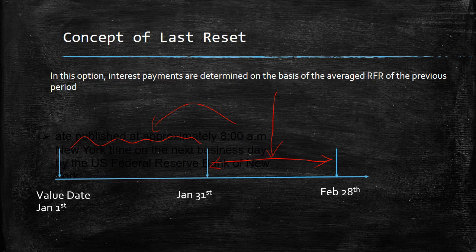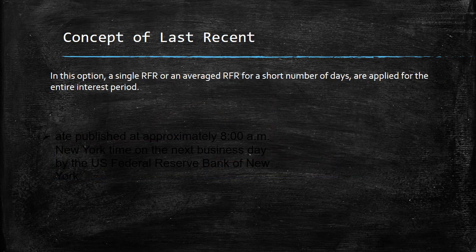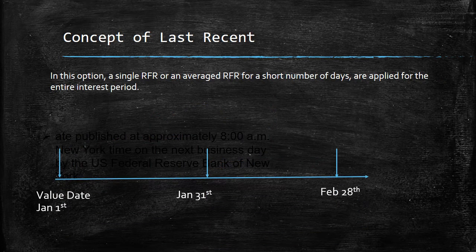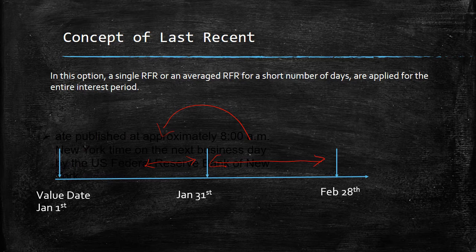That gave rise to another similar kind of approach, where a single RFR or an average RFR for a shorter number of days is applied for the entire interest period. For example, instead of using the complete previous period, I calculate based on the RFR of a shorter previous period — just a shorter window in the past.